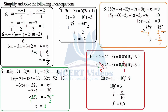Now let's transpose minus 1 towards the right-hand side — it will get added with 6. So 6 plus 1 gives us 7, and we are left with 5m on the left-hand side. In this step let's also transpose 5 towards the right-hand side; it gets divided. So 7 divided by 5 gives m equals 7 over 5. With this our sixth question is completed.